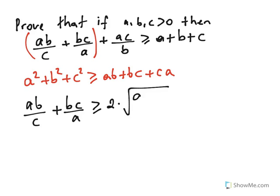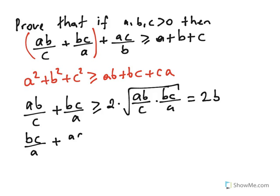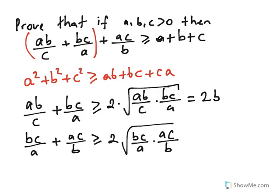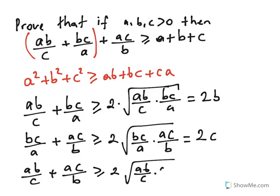That square root simplifies to 2B. Similarly, BC/A + AC/B ≥ 2√(BC/A · AC/B) = 2C. And AB/C + AC/B ≥ 2√(AB/C · AC/B) = 2A.